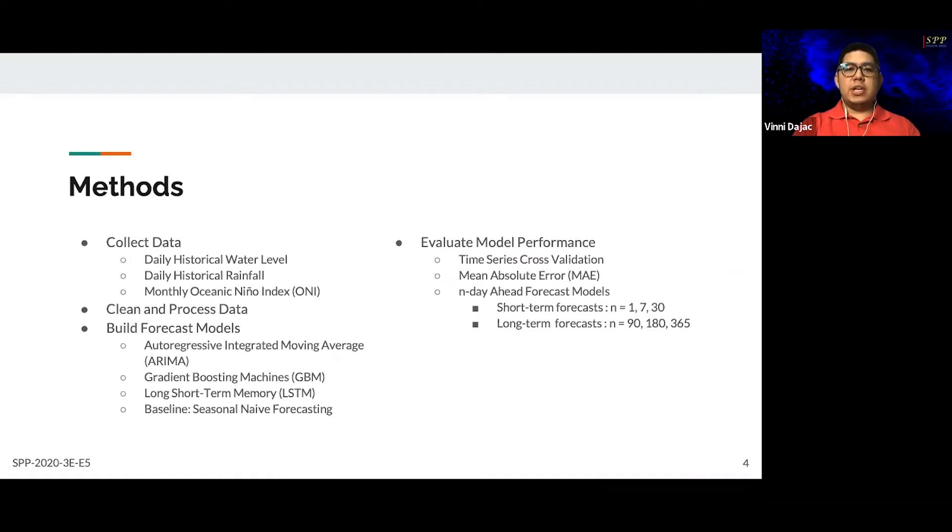Apart from the historical dam levels as the main predictor, we also include rainfall and ONI as exogenous variables. We compare three ML models – ARIMA, GBM, and LSTM, a type of deep neural network. As a baseline, we use a seasonal naïve forecasting method. We then implement a time-series cross-validation approach to have a robust model evaluation using the expected value of the mean absolute error. For each dam, six different prediction horizons were considered to enable both short-term interventions and long-term planning.